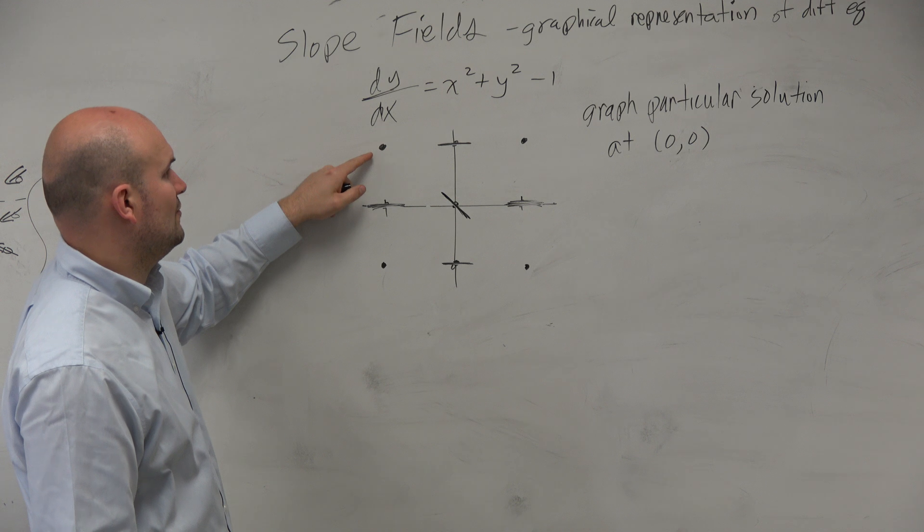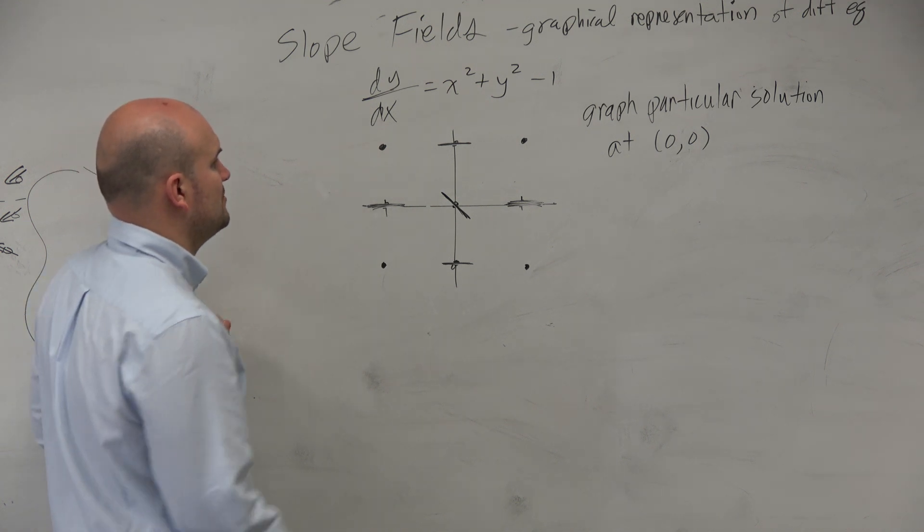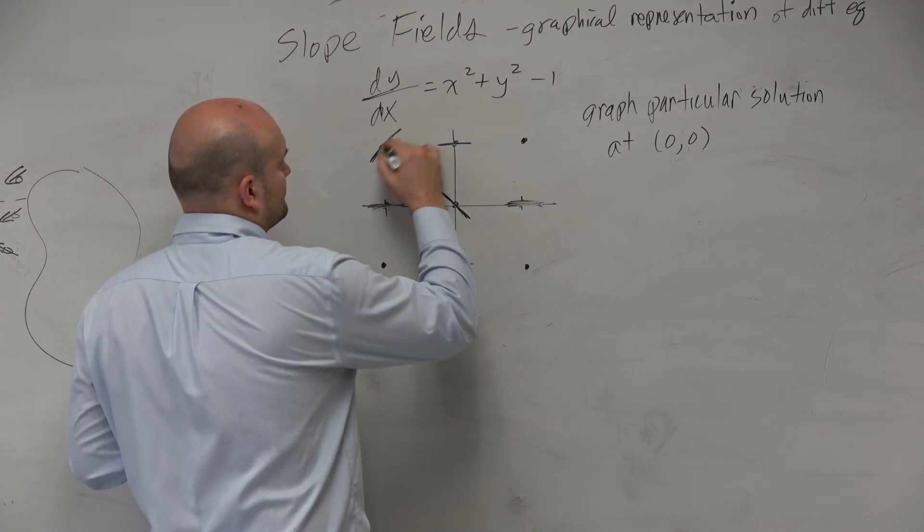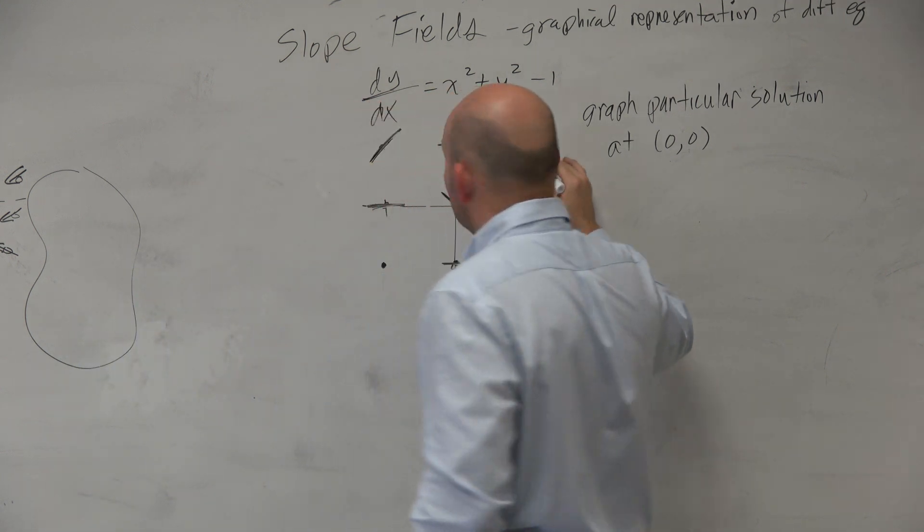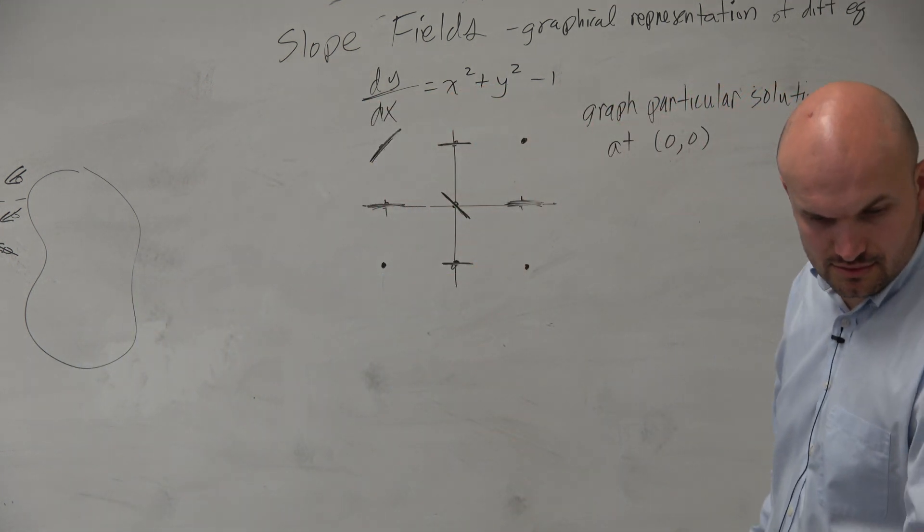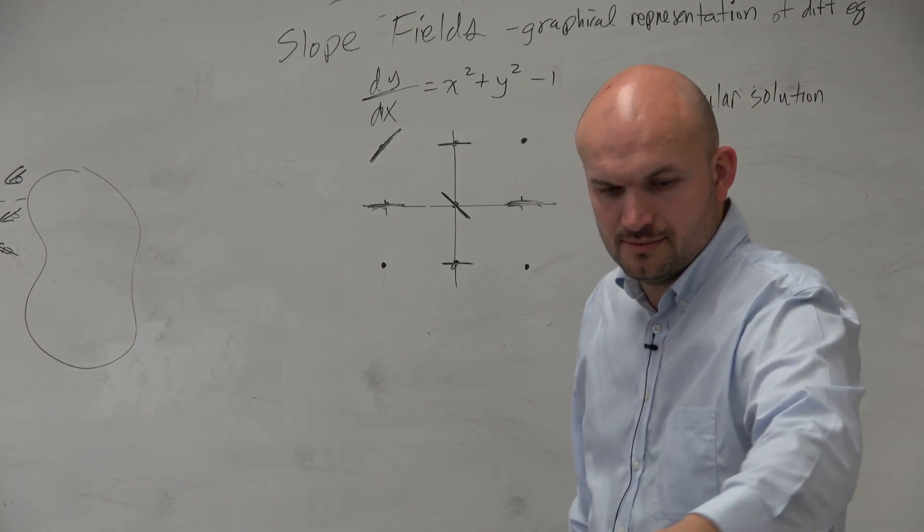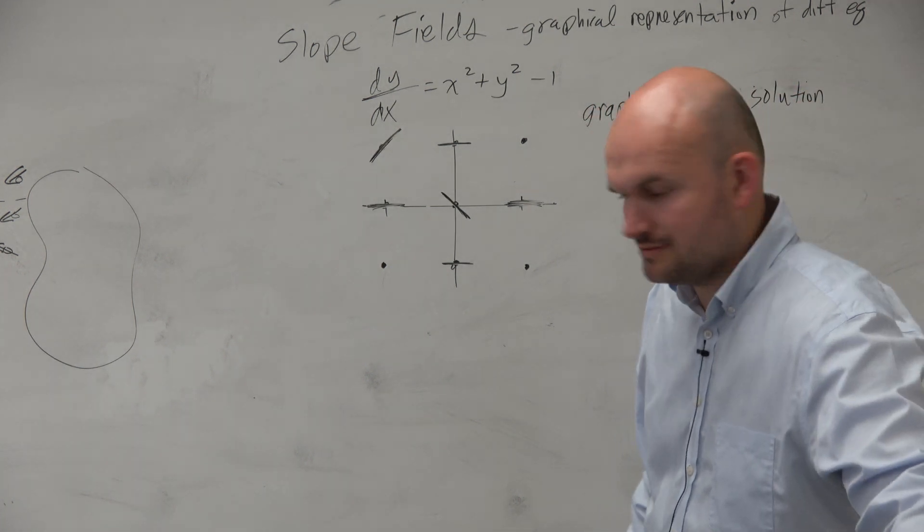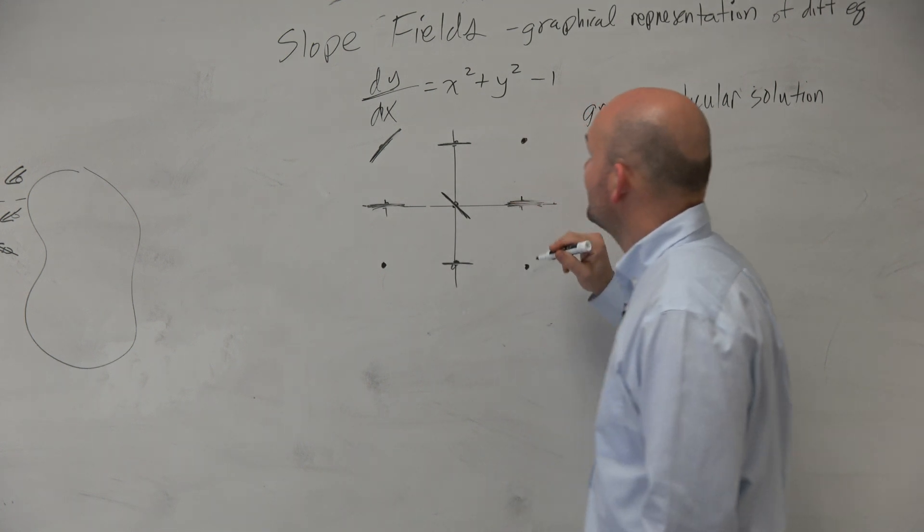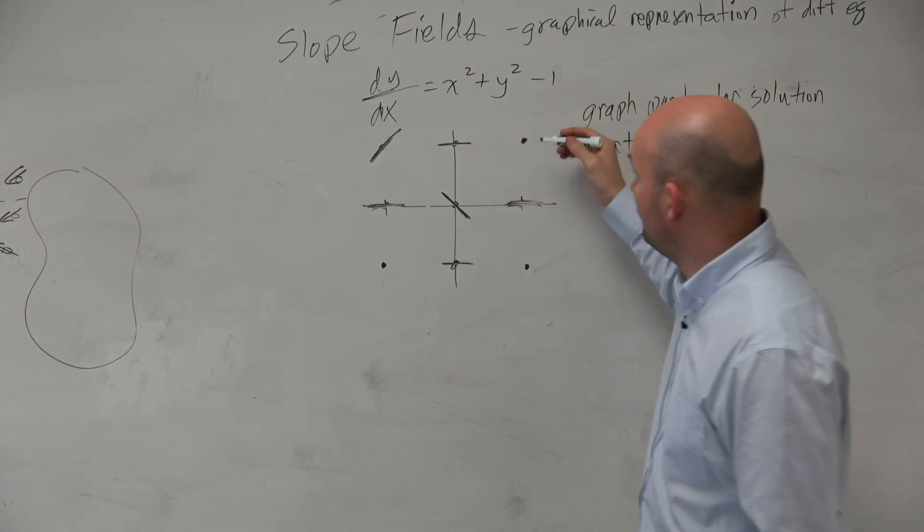And let's see. This is at negative 1, negative 1. So that's going to be 2 minus 1. So that's going to be positive 1. At 1 comma 1 is, again, going to be 1.